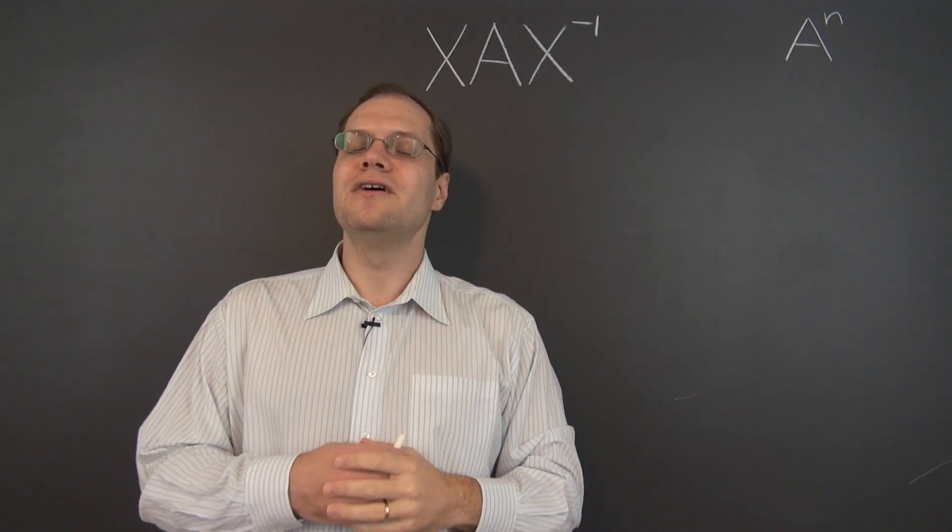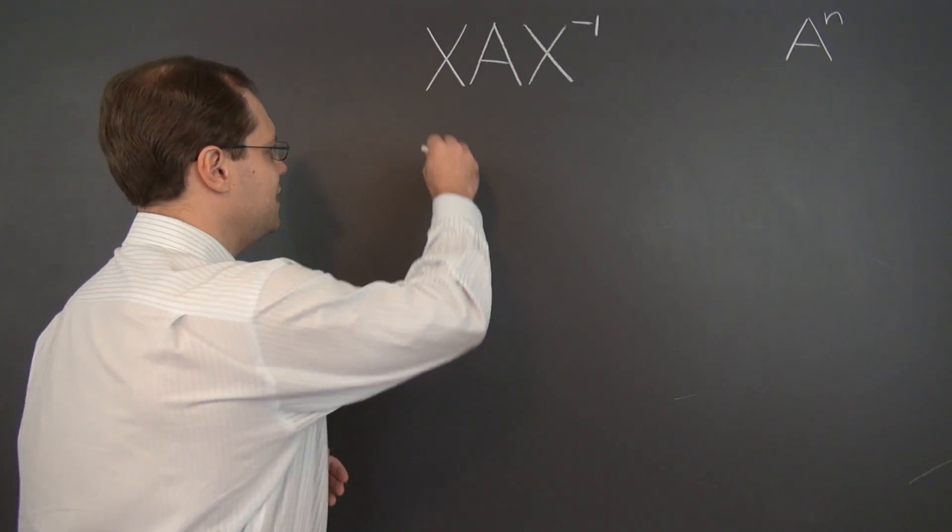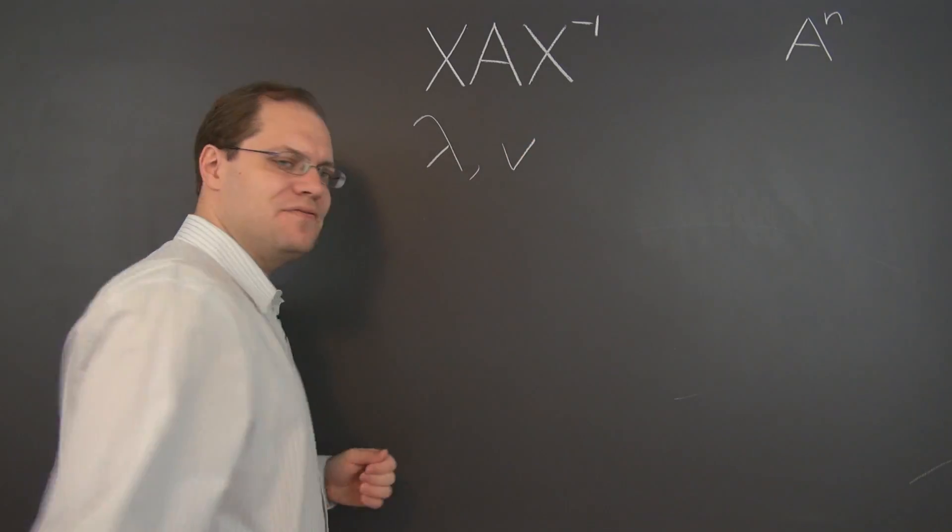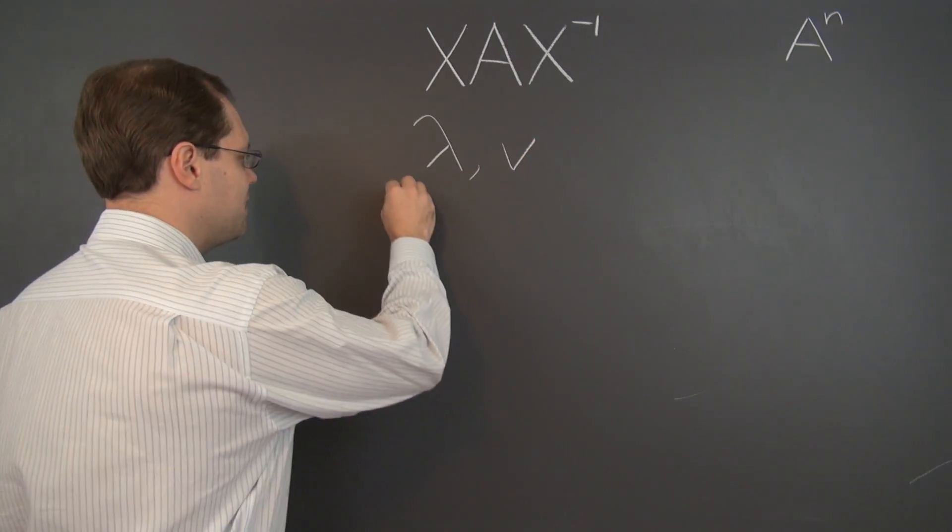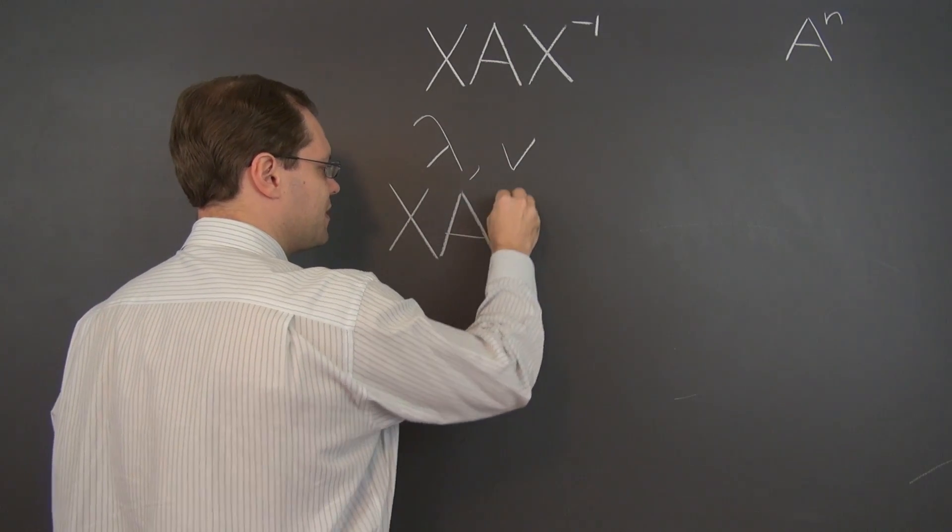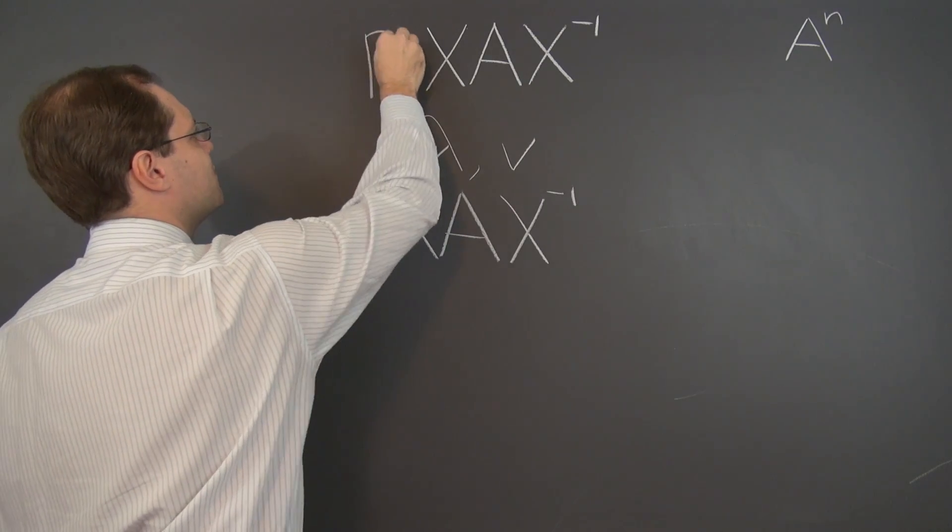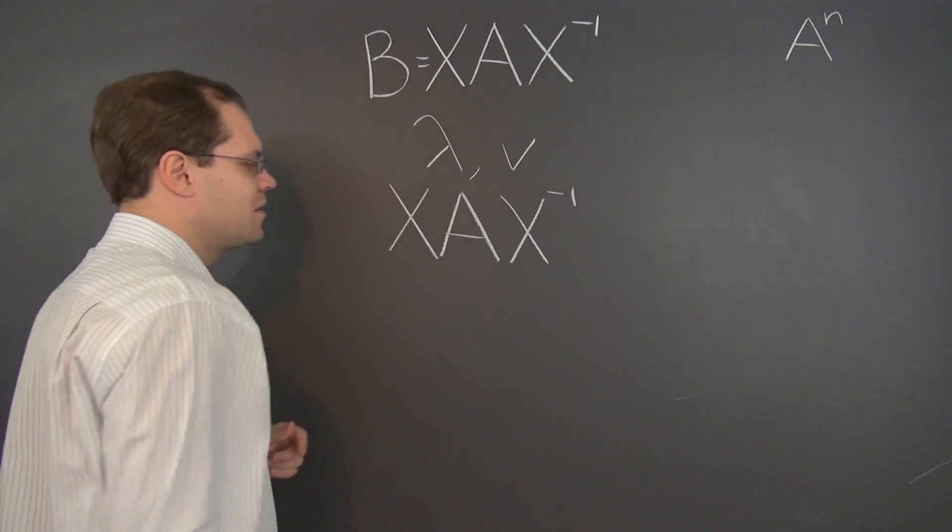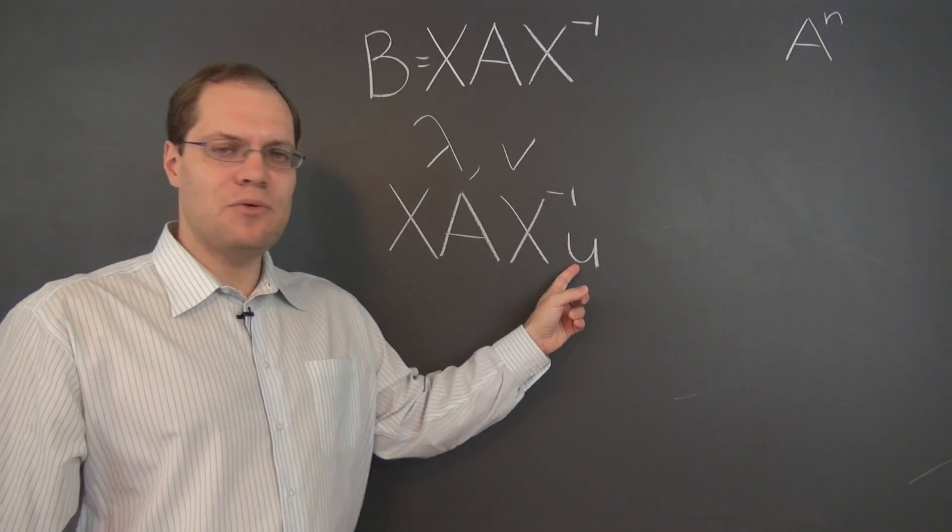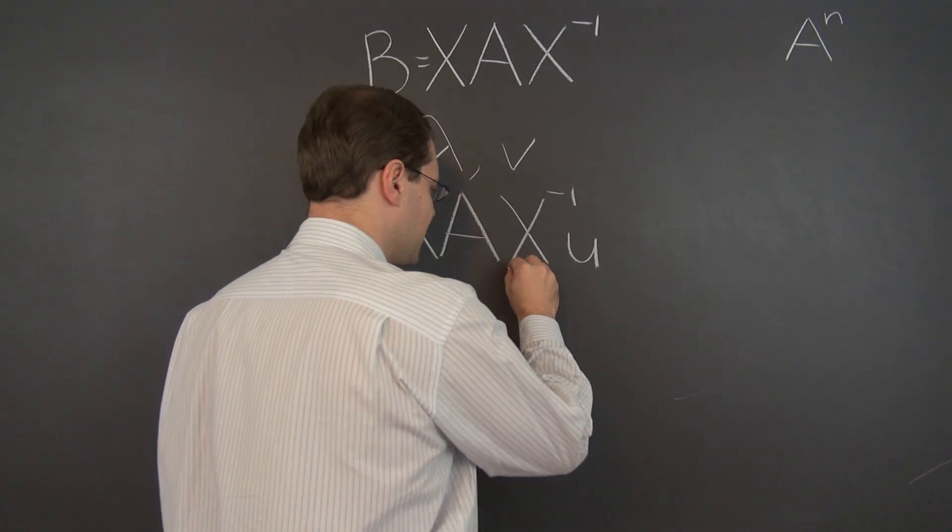So let's discover its properties. Suppose that lambda is an eigenvalue of A, and that V is the corresponding eigenvector. I will now multiply our new matrix, X, A, X inverse, let's give it a name, let's call it B, by a vector U. And of course I want the vector U to be such that X inverse U is V.